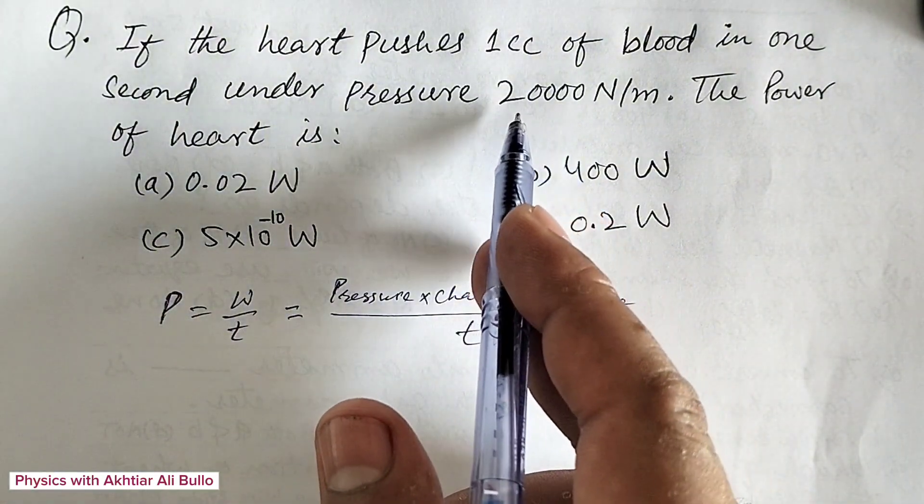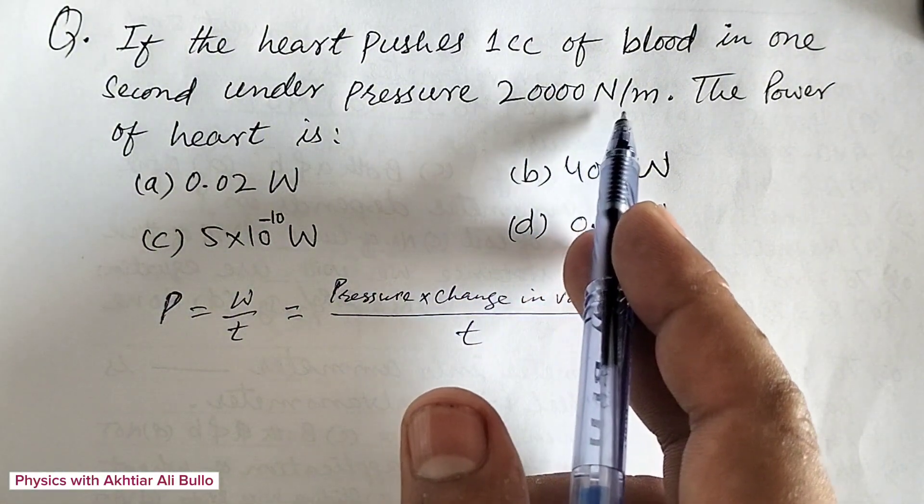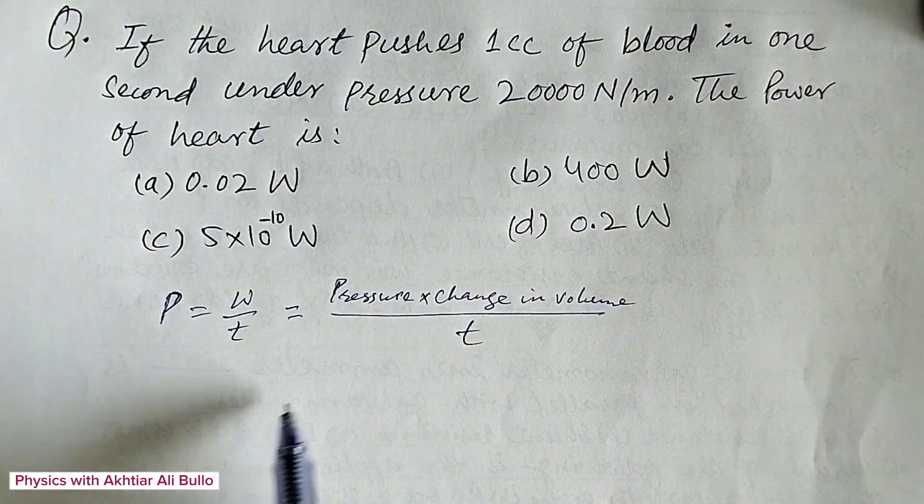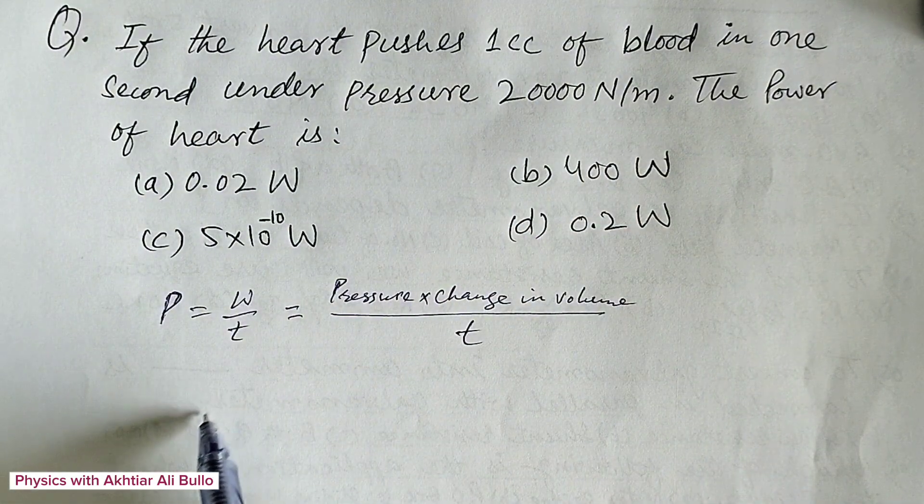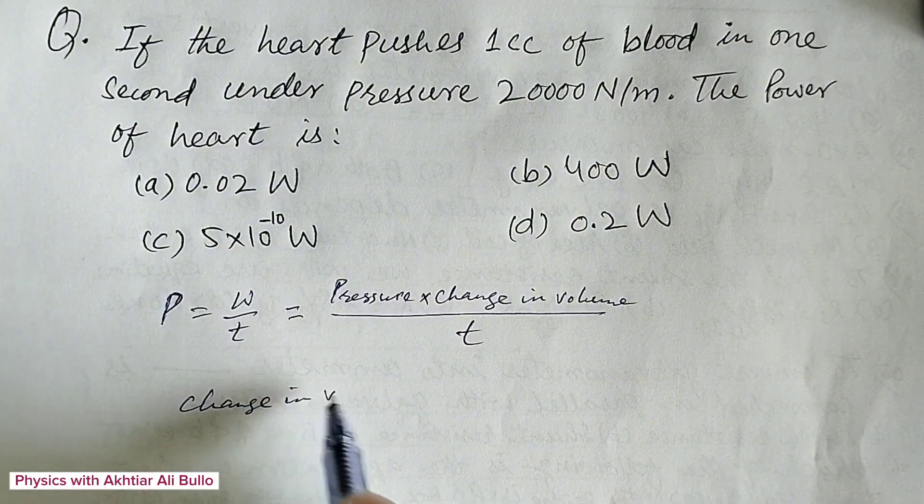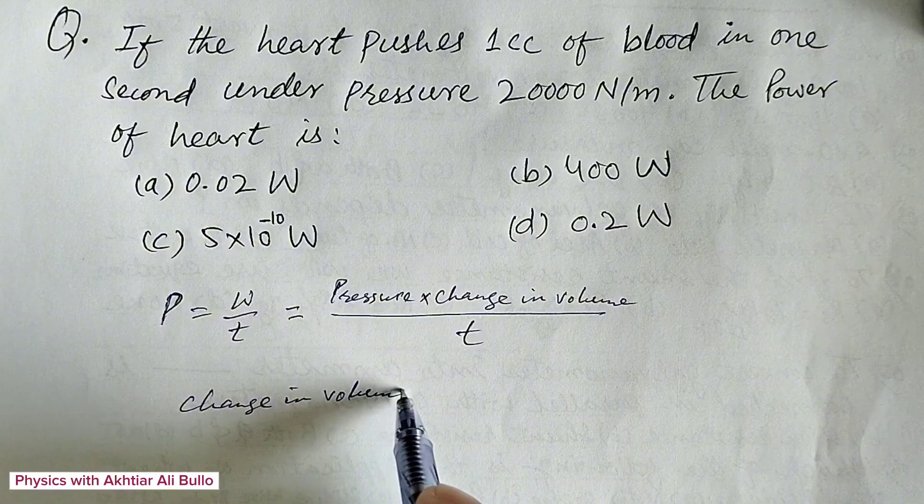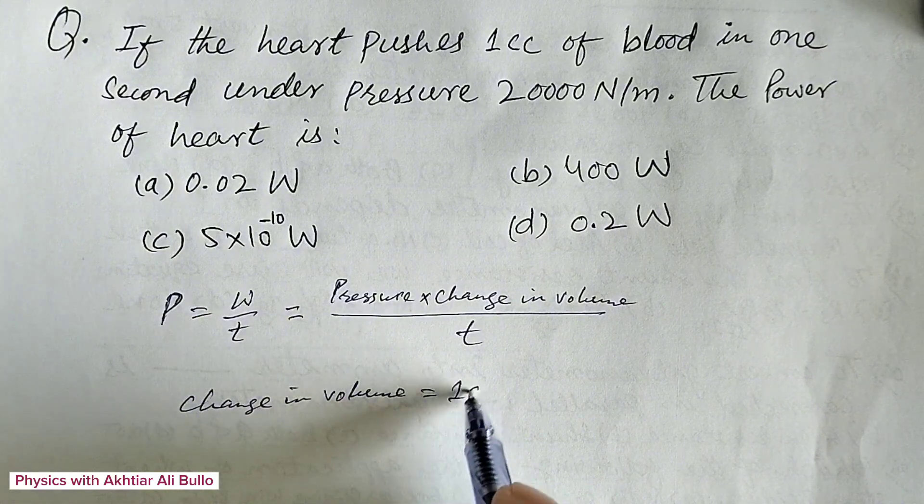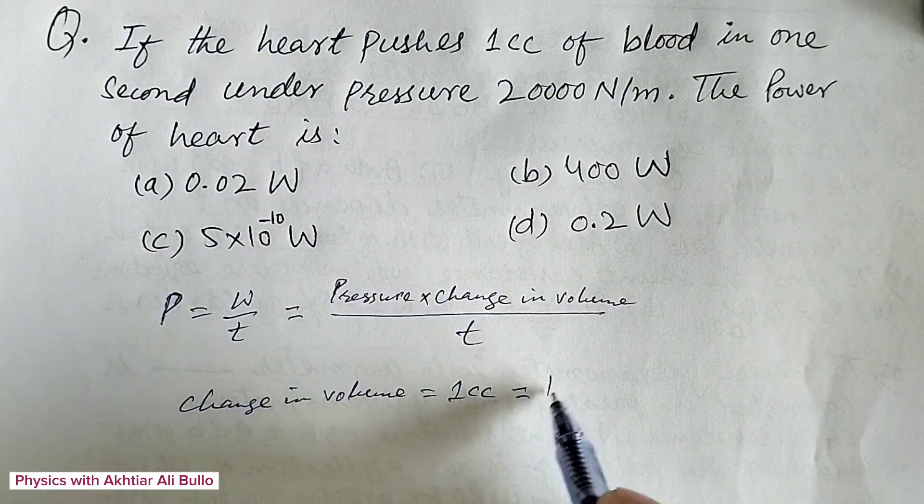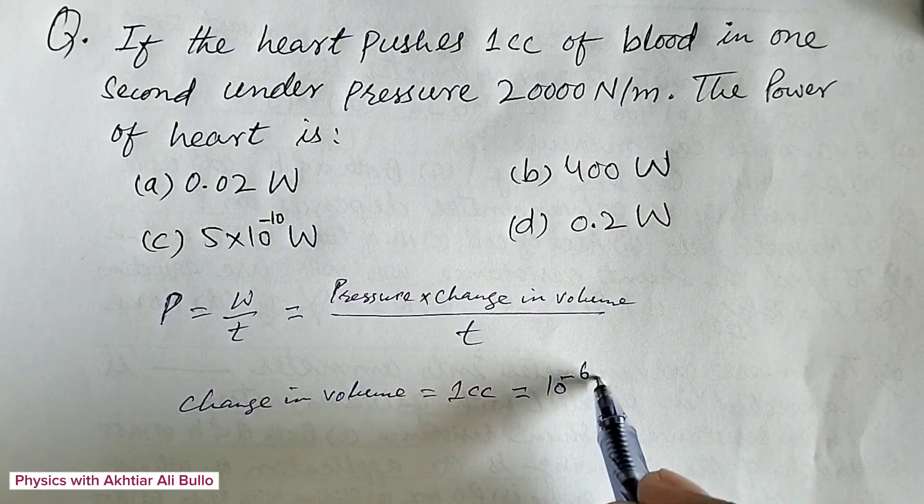Pressure is given as 20,000 Newton per meter squared. Change in volume is equal to 1 cc of blood, which is equal to 10 raised to power minus 6 liters.